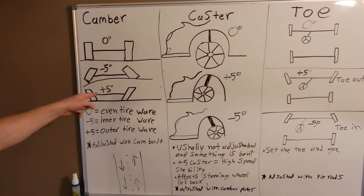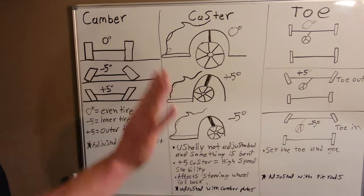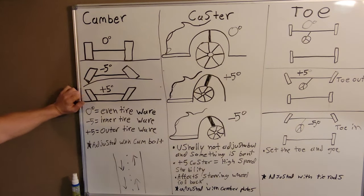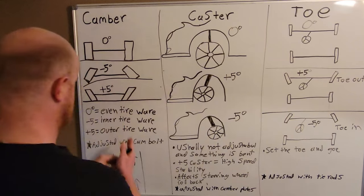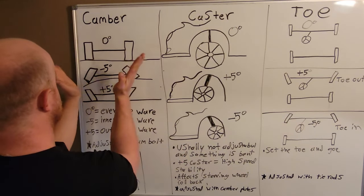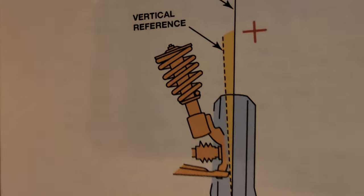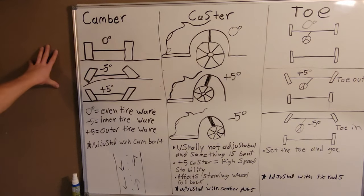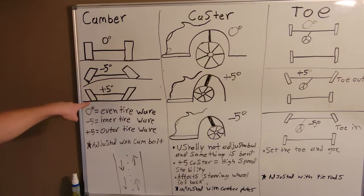Next, you have positive camber. Positive camber is where the tires will go like this. Instead of negative camber, they'll actually point in. This is what positive camber would look like, and this is going to cause outer tire wear.